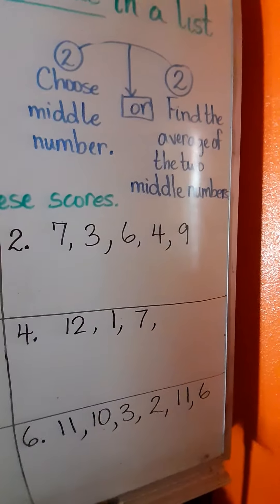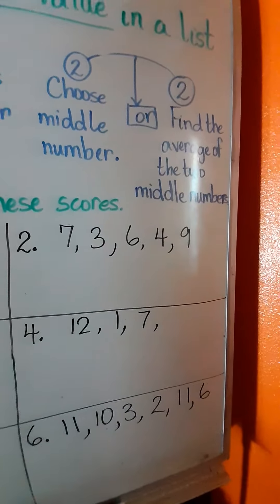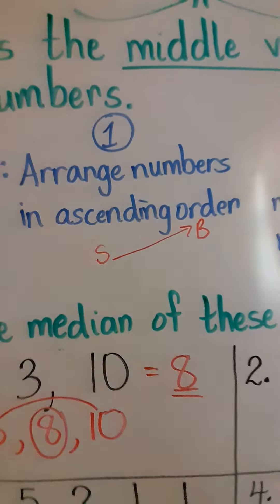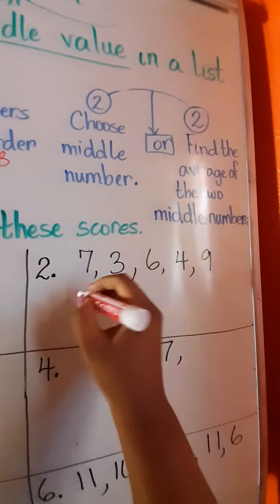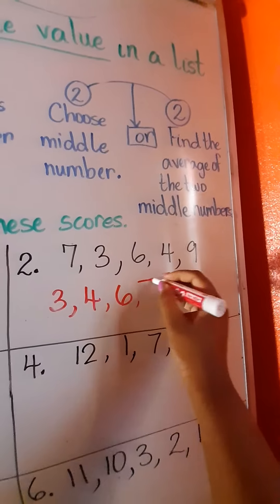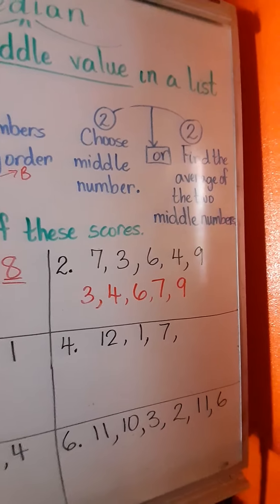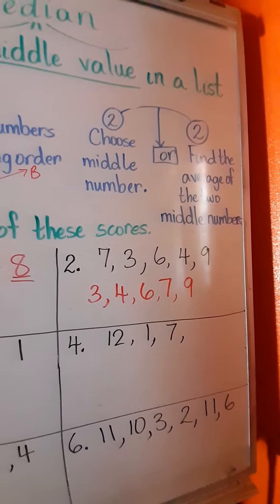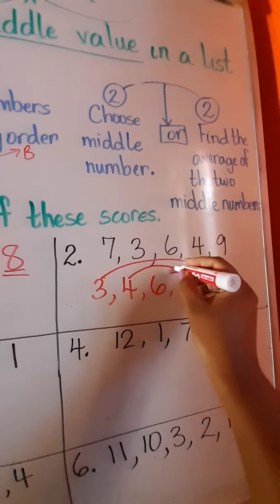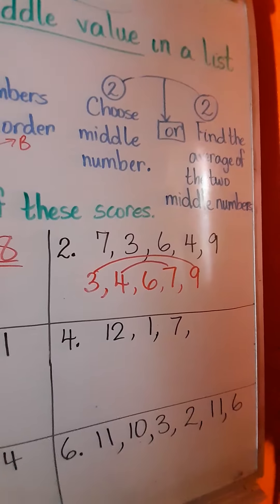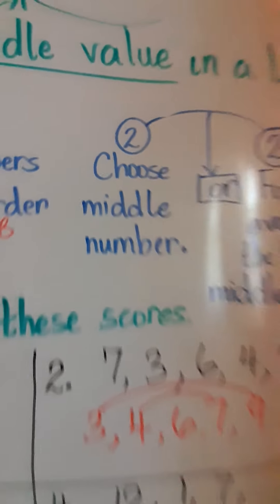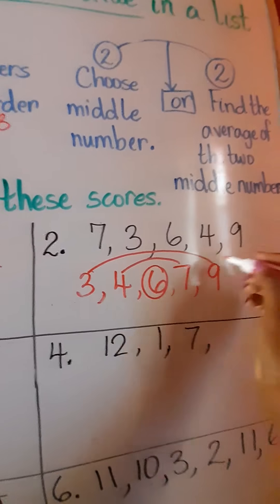Let's look at number 2. The scores are 7, 3, 6, 4, and 9. Step 1 says arrange those numbers in ascending order. The smallest number is 3, so we have 3, then 4, then 6, then 7, then 9. Using the bridge effect: 3 will bridge with 9, and 4 will bridge with 7, but 6 does not have a number to bridge with — 6 stands alone. Because of that, we choose 6 as our middle number. 6 is our median.